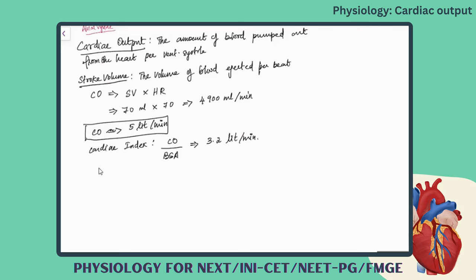Now we have to consider the cardiac output as one of the important parameters when talking about cardiac abnormalities. So what are the factors which are going to help in maintaining the cardiac output? If there is any abnormality in those factors, it will directly have a reflection in the cardiac output.